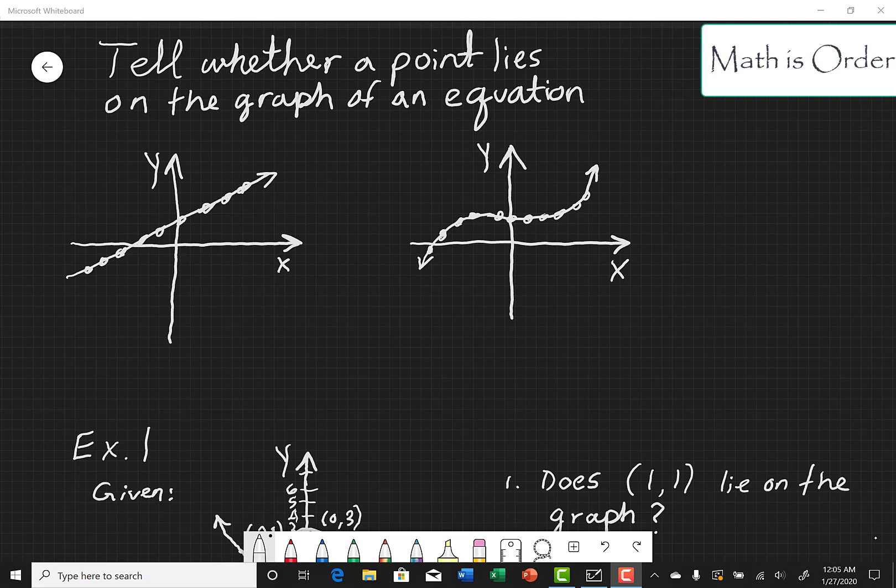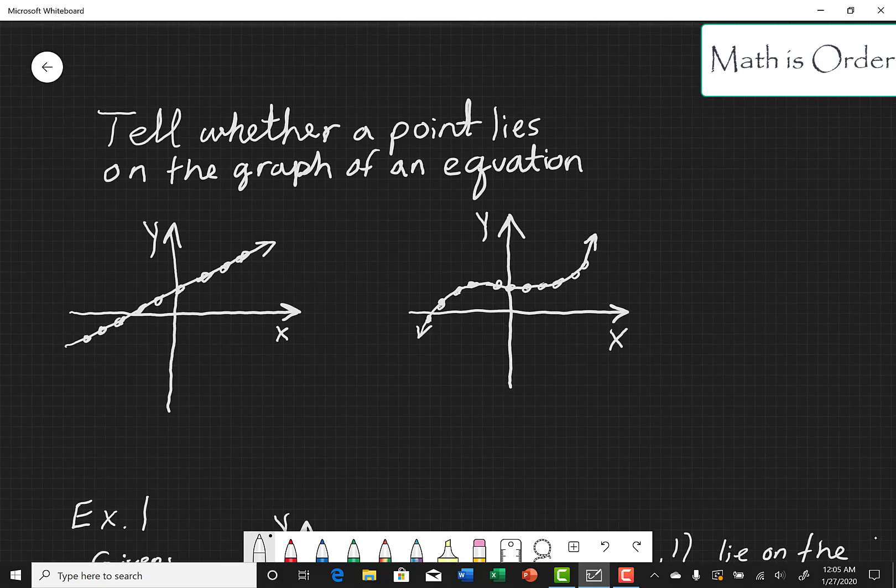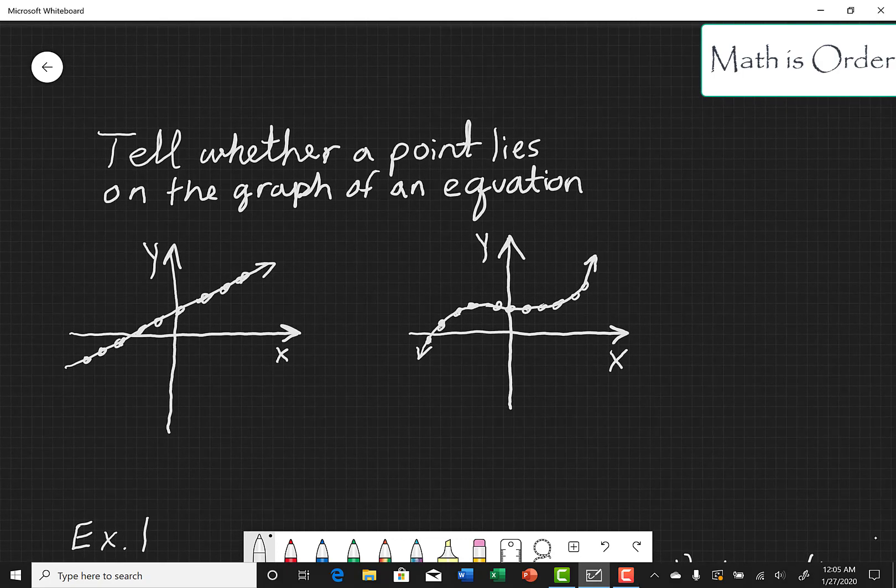Consider the two graphs here. The line is made up of an infinite number of points where each point is represented by an ordered pair. Same for this curve on the right. It's also made up of an infinite number of points.